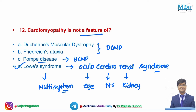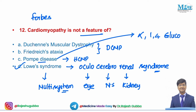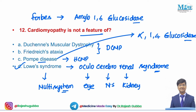Another glycogen storage disorder associated with cardiomyopathy, apart from Pompe's, is Forbes disease. In Pompe's, the enzyme deficiency is alpha-1,4-glucosidase. In Forbes disease, the deficient enzyme is amylo-1,6-glucosidase. Both Pompe's and Forbes are glycogen storage disorders associated with the development of cardiomyopathy.